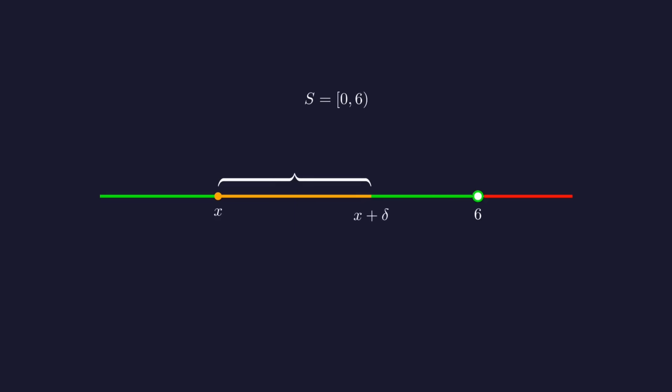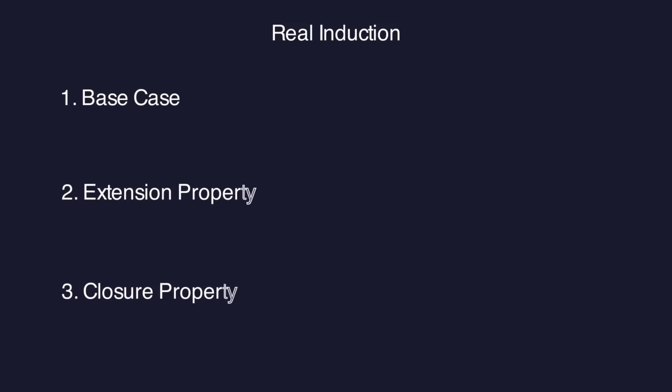In other words let delta be one half the distance from x to 6. Then the interval x to x plus delta is certainly contained in s, yet the number 6 or anything past it is not in s. To patch things up we actually need an extra hypothesis.